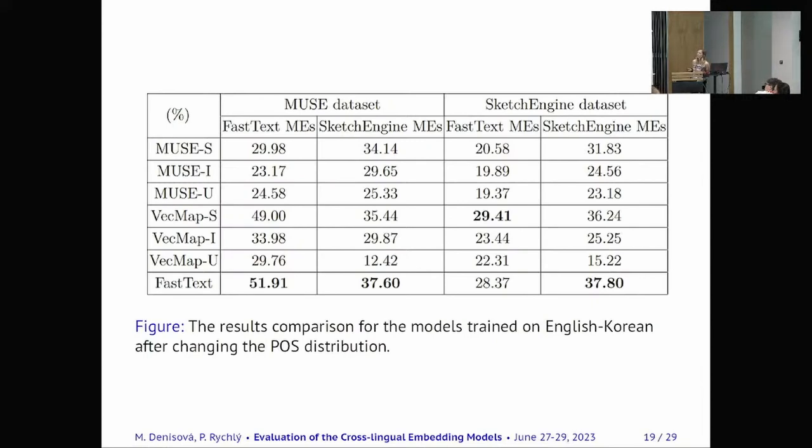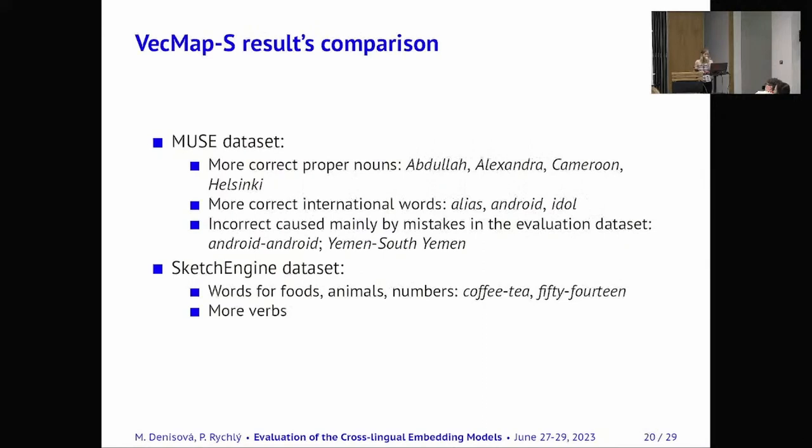So we can see that MUSE datasets had a lot of proper nouns. It was the largest part of it and Sketch Engine had a lot of nouns. So we computed the recall with both evaluation datasets and we can observe very big gaps between two of them. So for example this is VecMap model that has 49% recall and when we measured the recall with the Sketch Engine it dropped to 29% which is nearly 20%. So we looked at a few examples so first was that of course MUSE dataset contain more correct proper nouns because VecMap was good at identifying the equivalents for proper nouns and also it was good at identifying good equivalents for international words such as alias, android or idle.